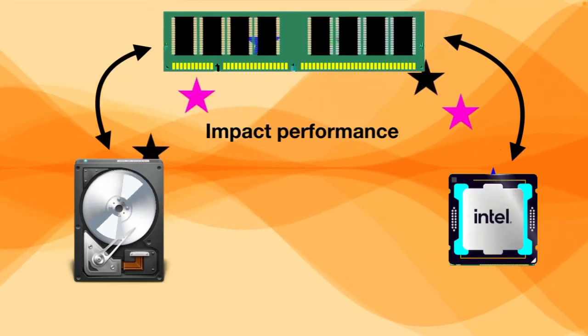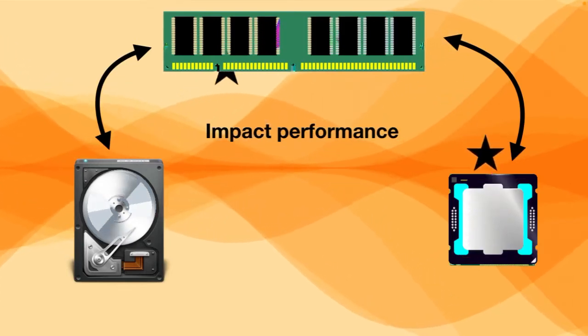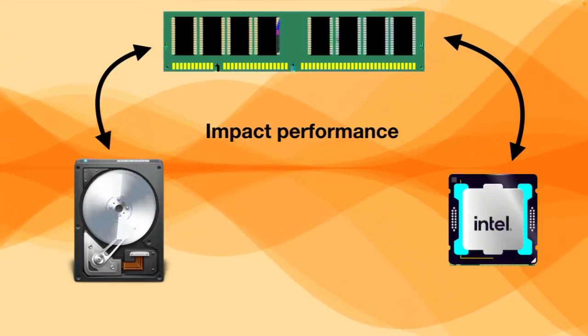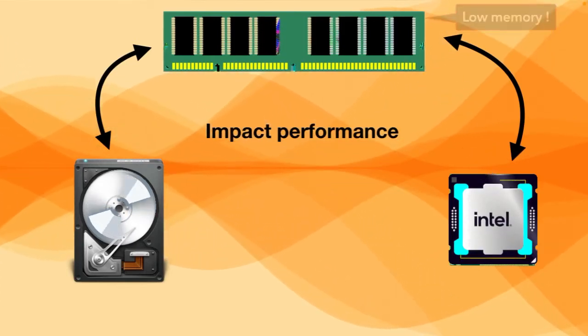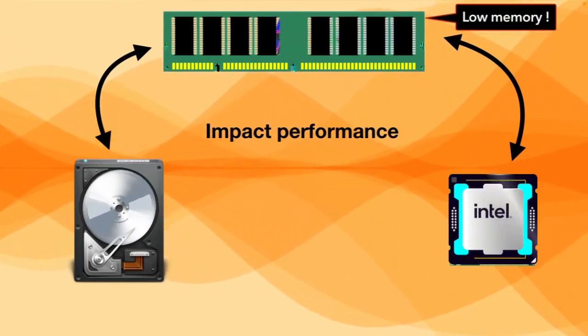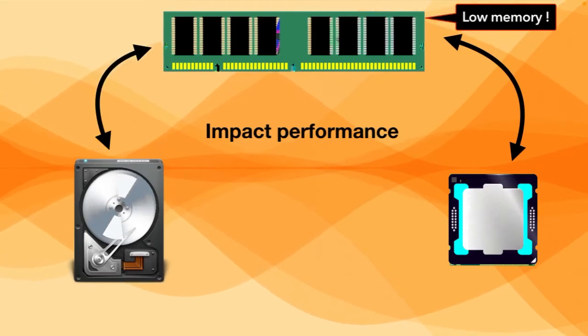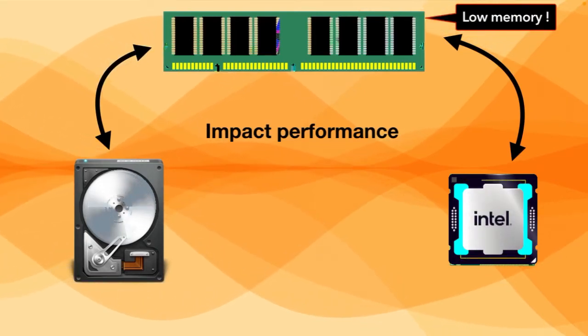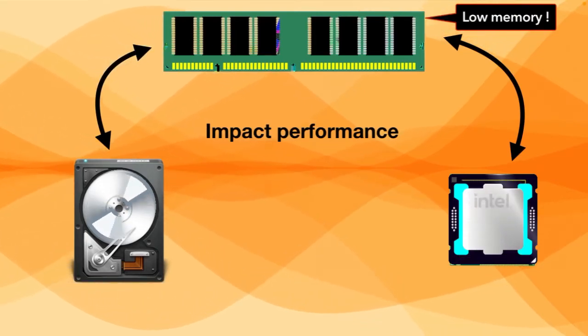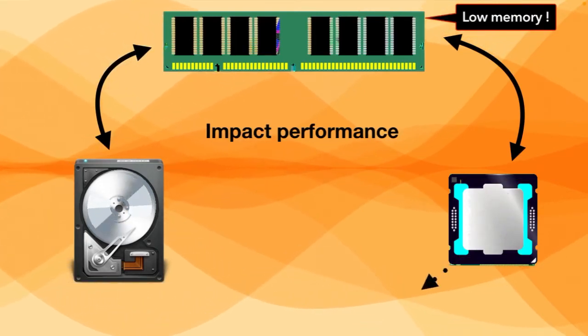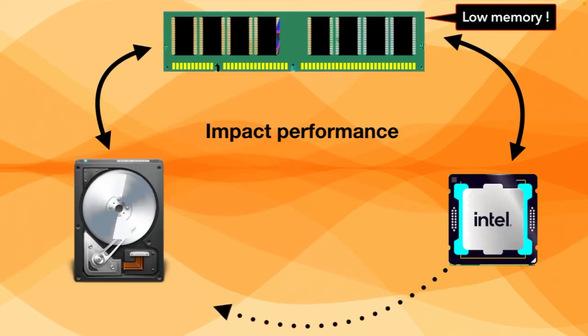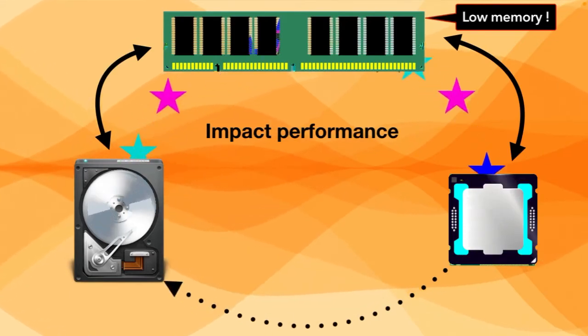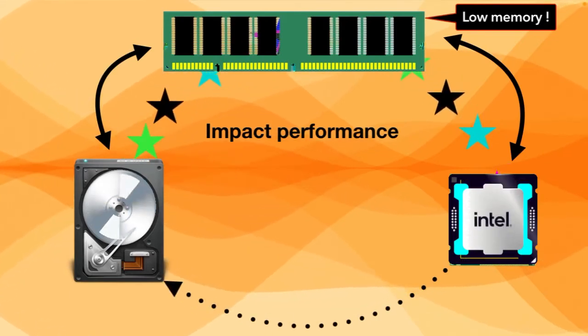For example, if your processor wants to load more data than your RAM can handle, it has to keep going back to the hard drive to load more data.